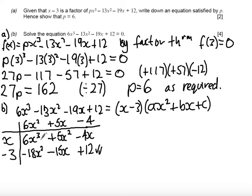So I can give myself a little tick at the end because I know this all adds up. So now what I know is that my cubic is actually equal to x minus 3 times 6x squared plus 5x minus 4.